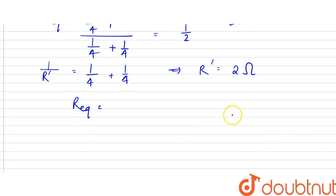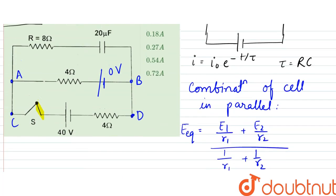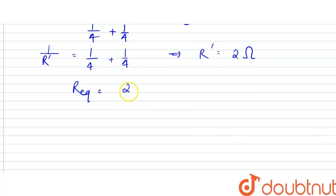And R equivalent, since there is one more 8 ohm resistance, that would be in series. So that would be 2 plus 8, which is equal to 10 ohms. So that is the R equivalent.